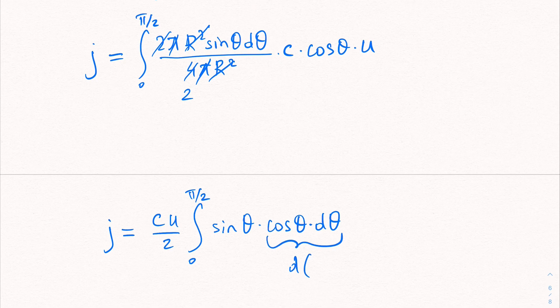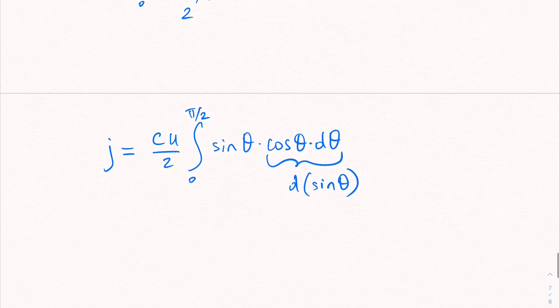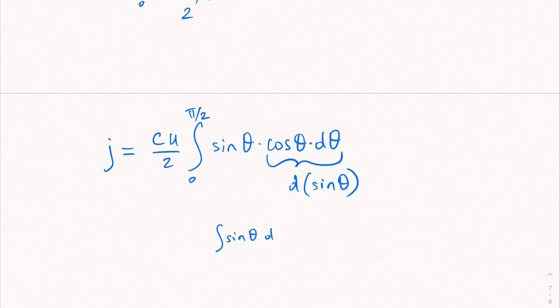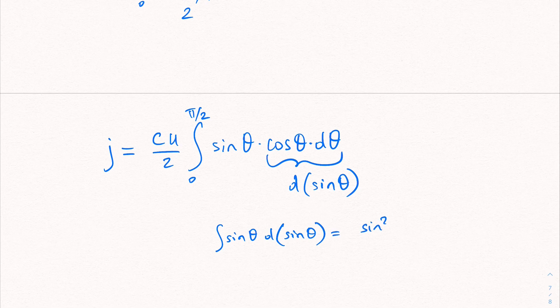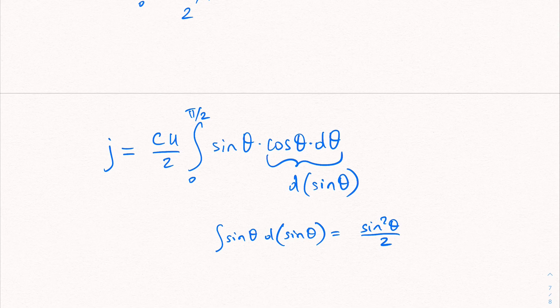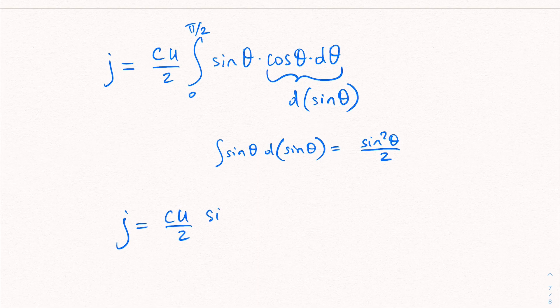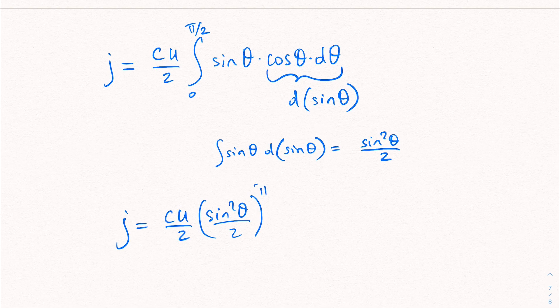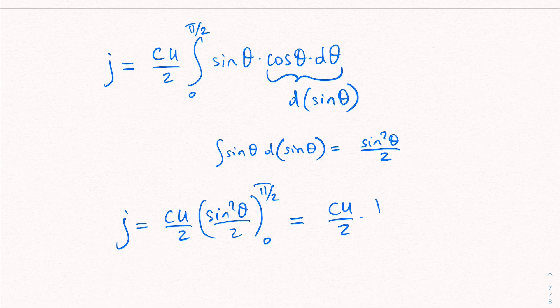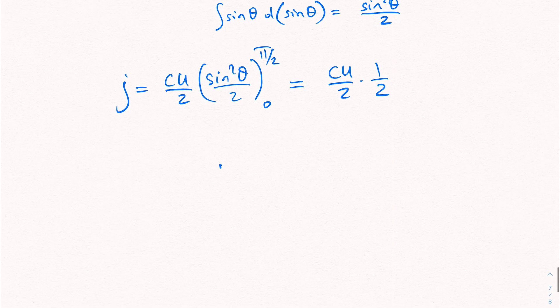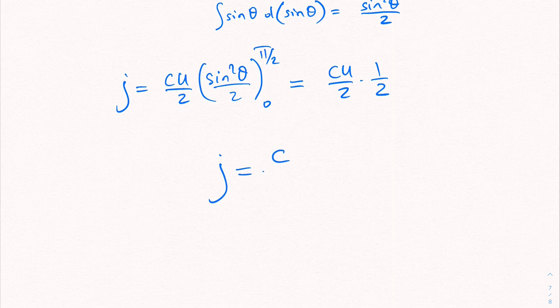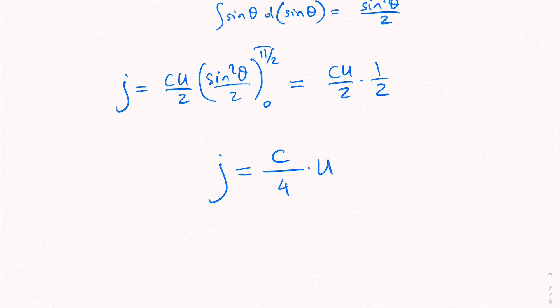Now notice that this is nothing but d sine theta, right? So I can imagine sine theta d theta, d sine theta integral being sine squared theta over 2. It's just like x times dx integral, which becomes x squared over 2. So our integral becomes j equals to c u over 2 sine squared theta over 2 to be evaluated at pi over 2 and 0. So what do we get? c u over 2 times 1 over 2. There you go. We have j equals to c over 4 times u. Thank you.